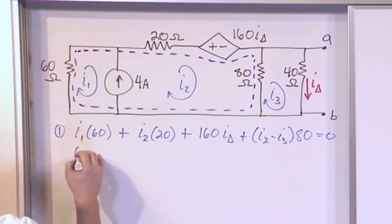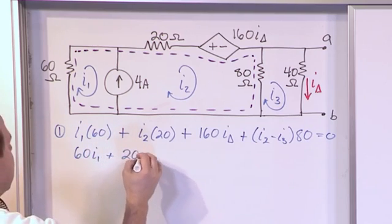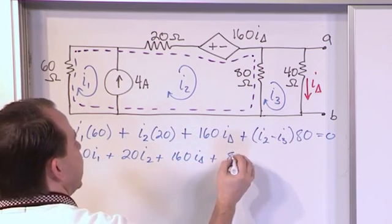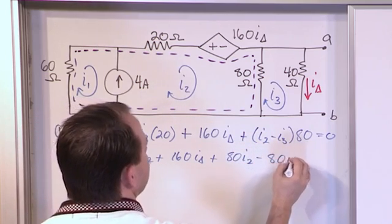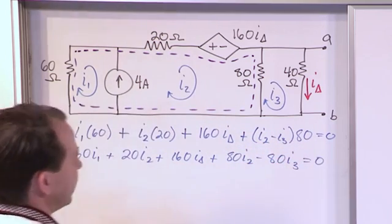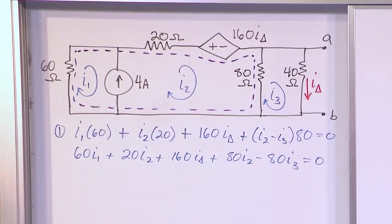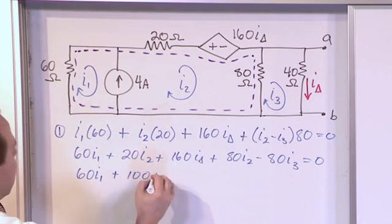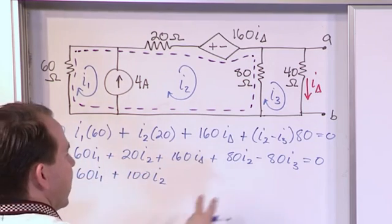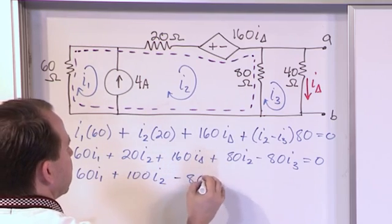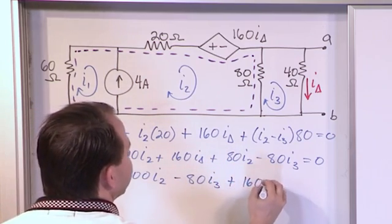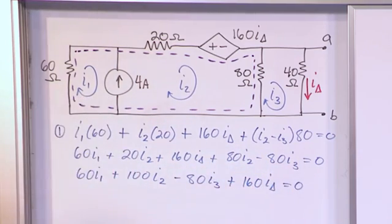So let's multiply and simplify. So 60 I1 plus 20 I2 plus 160 I delta plus, here we distribute in 80 I2 minus 80 I3, and this is equal to zero. Now let's go ahead and simplify. For the I1, I don't have any more I1, so it'll be 60 I1. For I2, I have this guy and I have the 80, so it's going to be 100 I sub 2. And then for I sub 3, it's going to be negative 80 I sub 3, and then let me go ahead and write my 160 I delta last.